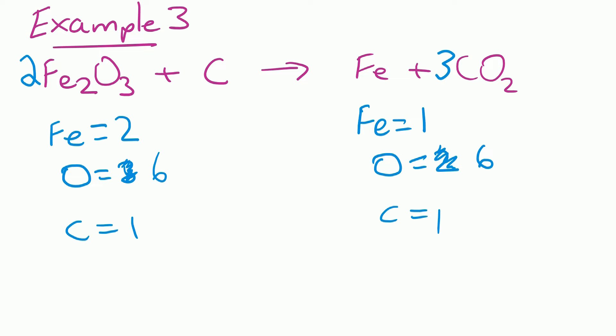The oxygens are now correct. Because we multiplied Fe2O3 by two, we've now got four Fes on the left, so we put a big four in front of Fe on the right. By placing the three in front of CO2, we've now got three Cs on the right, so we put a big three in front of C on the left. Final check: four Fes on each side, six Os on each side, and three Cs on each side. That one is now balanced.